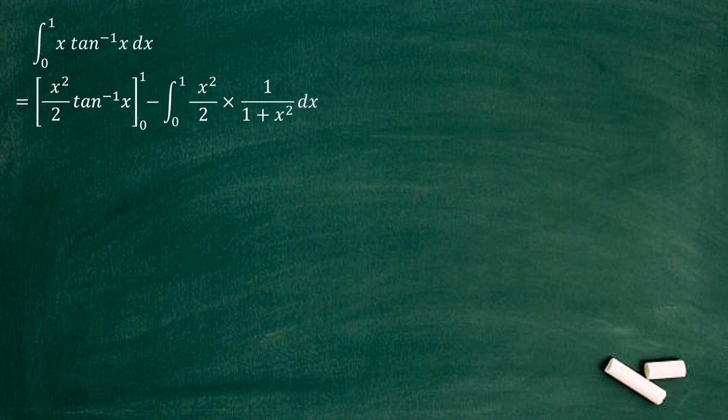Now denominator value 2 is a constant, so we can bring this 2 value outside of the integral. Then we have 1 over 2 integral x squared over 1 plus x squared.